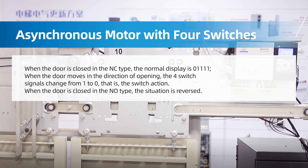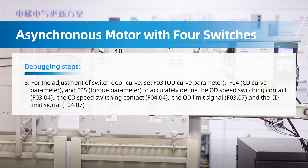When the door is closed in NO type, the situation is reversed. For adjustment of the switch door curve, set F03 (OD curve parameter), F04 (CD curve parameter), and F05 (torque parameter) to accurately define the OD speed switching contact F03.04, the CD speed switching contact F04.04, the OD limit signal F03.07, and the CD limit signal F04.07.